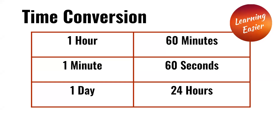Time conversion. One hour is equal to 60 minutes. One minute is equal to 60 seconds. One day is equal to 24 hours.